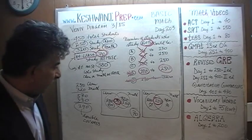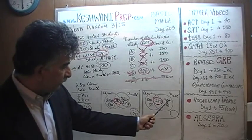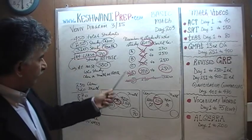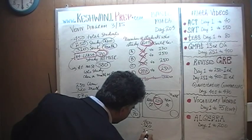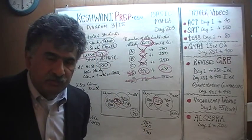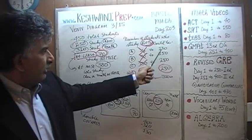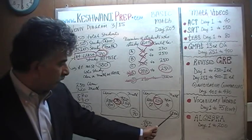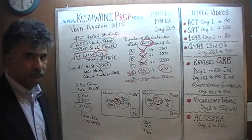To finish the problem: if 250 study both, then 250 plus 70 is 320 who study one or both subjects, and 450 minus 320 gives 130 who study neither. So the range for people who study neither is 70 to 130, while the range for people who study both is 190 to 250. The answer is D.